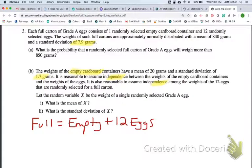Okay, so if we want to combine standard deviations here, we really can't add standard deviations. First they have to be independent random variables, and we're told that they're independent, so that's good.